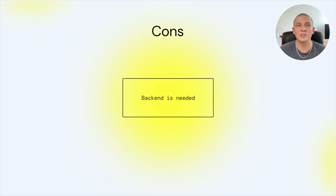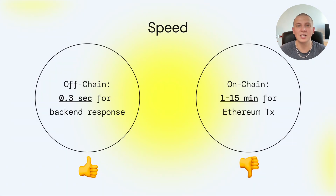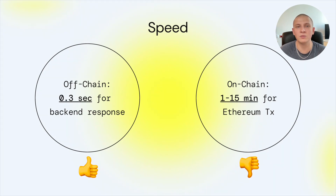So why is off-chain voting fast? Since the backend takes approximately 0.3 seconds to respond and a node takes 1 to 15 minutes to write any data to the blockchain, we can easily calculate the time saved when we move most of the work off-chain. This is also a big advantage in terms of scalability — it doesn't matter how many members your DAO has, the voting speed will remain the same.